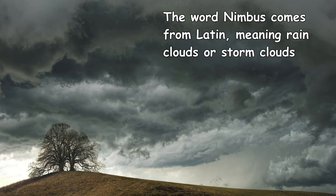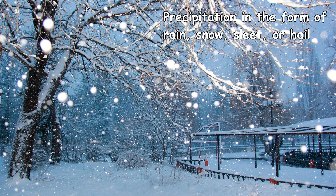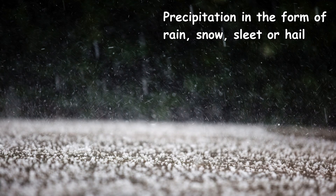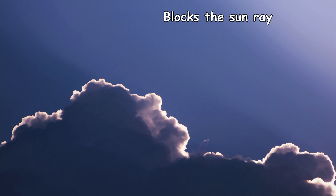The word Nimbus comes from Latin meaning rain clouds or storm clouds. The defining feature of any Nimbus cloud is that it is actively producing precipitation, whether that's rain, snow, sleet or hail. Nimbus clouds are often dark, grey, thick and uniform, and sometimes block the sun's rays.